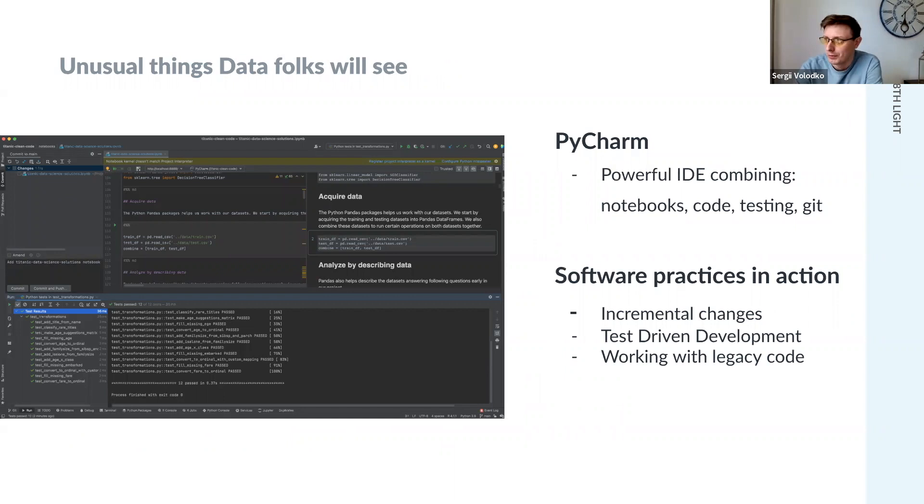Unusual things that data folks will see: First of all, it is PyCharm. I would say any software engineer that has access to data science team has to show them that they can have a better life because they work usually in pretty, by software standards, outdated environment. We have PyCharm and it really works really well with notebooks and tests and Git, everything integrated together. Like entire cycle that I described previously can be just done in one PyCharm window. And we're going to see some software practices in action: incremental changes, test-driven development and working with legacy code.